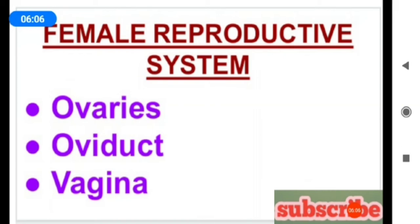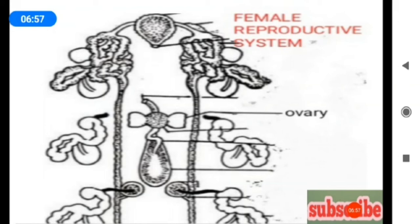The female reproductive system consists of three parts: ovaries, oviduct, and vagina. There is a single pair of ovaries in the 11th segment on the ventral side of the body. Each ovary is a coiled ribbon-shaped structure.